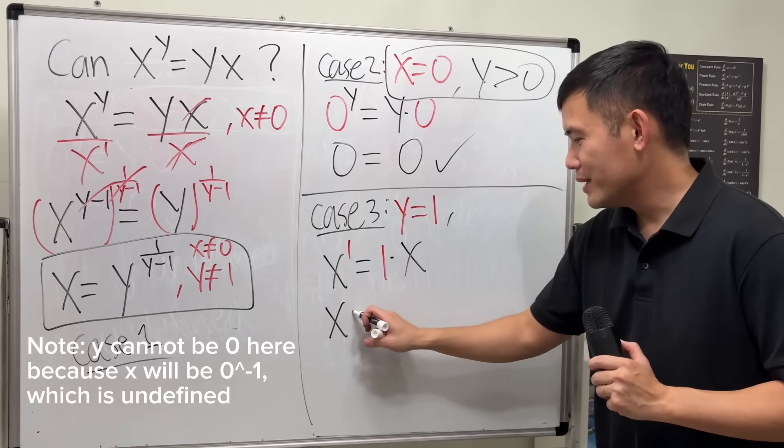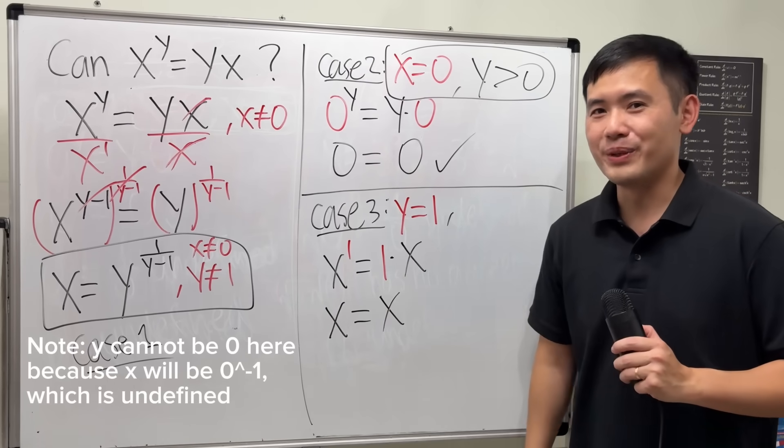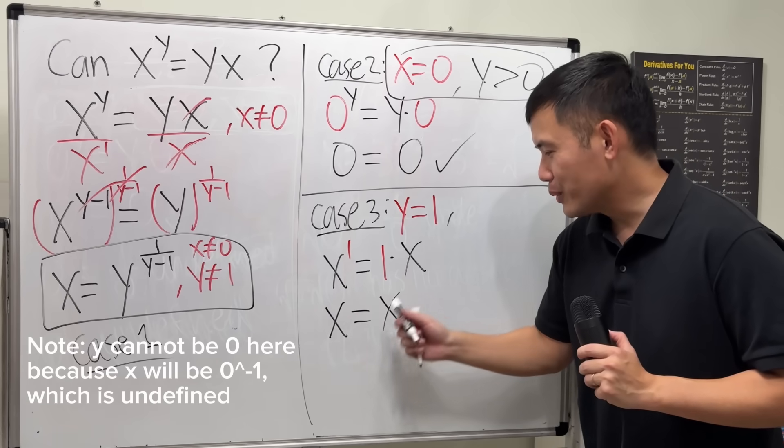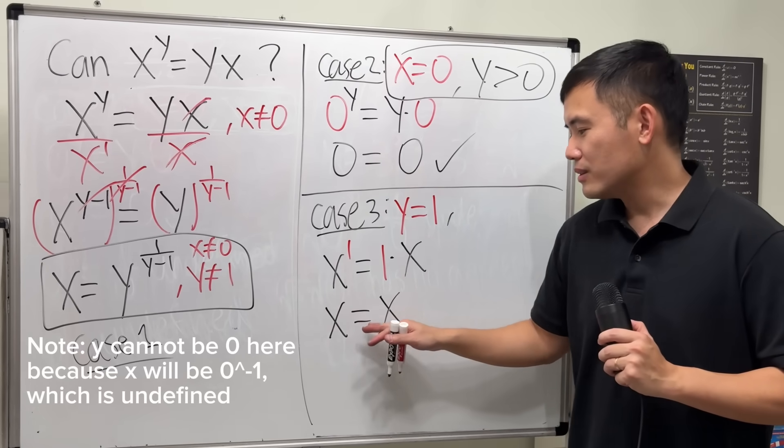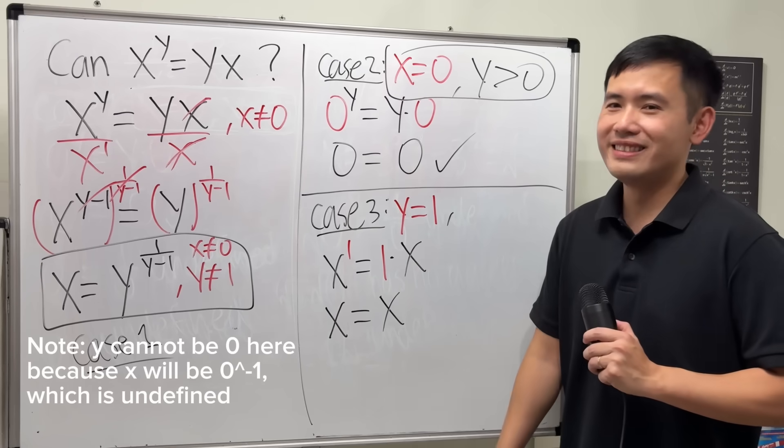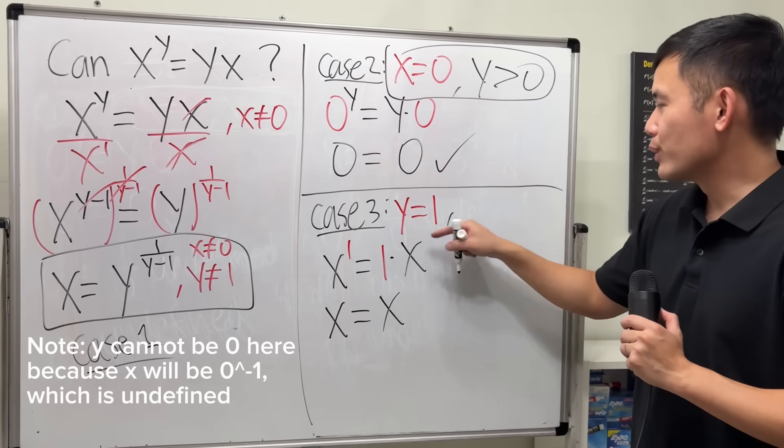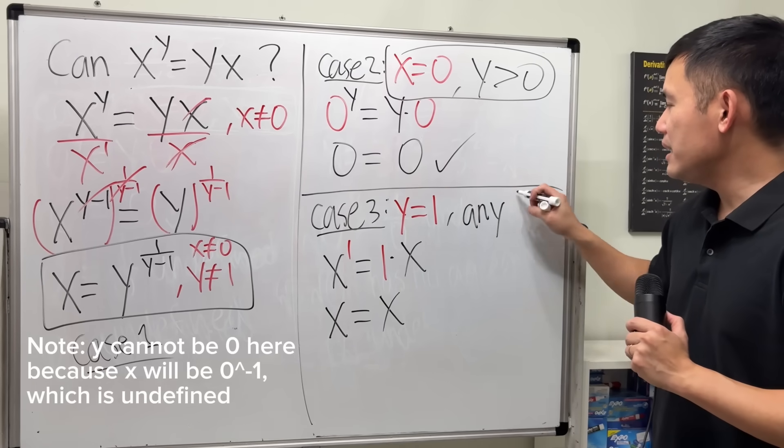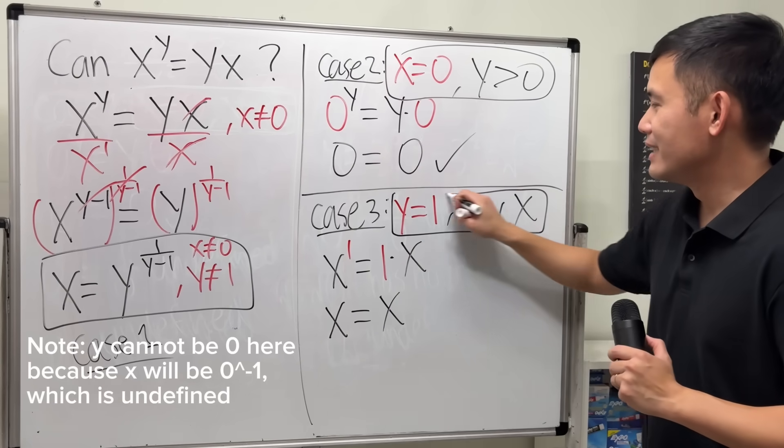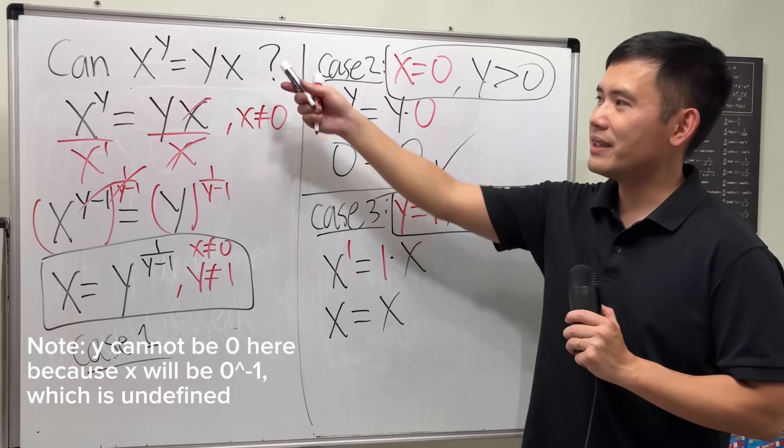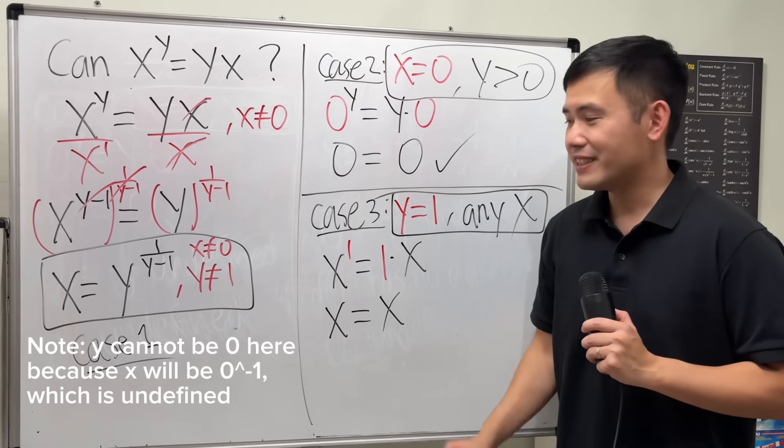This is very nice because that is always going to be x. 1 times x is always going to be x as well. x is equal to x. What's the solution for that? You can pick anything that you want because x is always equal to x. So, in fact, when y is equal to 1, you can have any x. Yep. So, these are the three cases that will make that equation work. That's it.